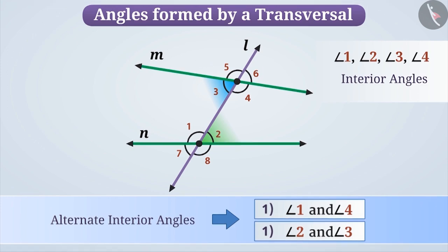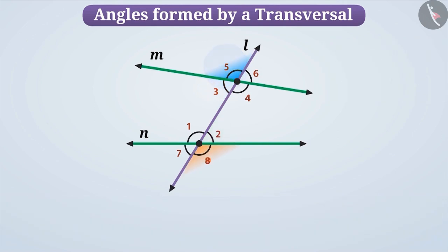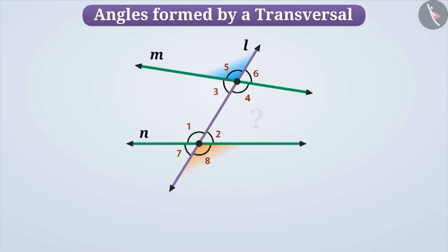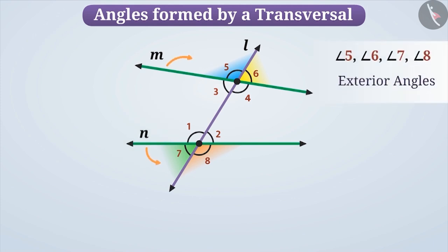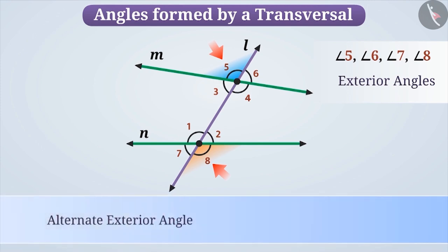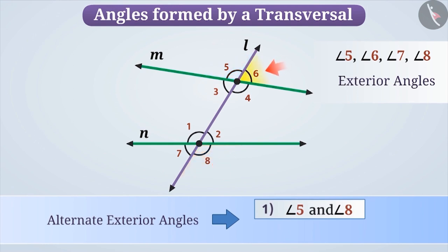Similarly, can you find a relation between angle 5 and angle 8? If we talk about angle 5, angle 6, angle 7, and angle 8, all of these angles are on the outside of lines M and N — that is why they are exterior angles. If we consider angle 5 and angle 8, they are exterior angles, their vertex is different, and they are on the opposite sides of the transversal. Therefore, such angles are called alternate exterior angles. Similarly, angle 6 and angle 7 are also a pair of alternate exterior angles.